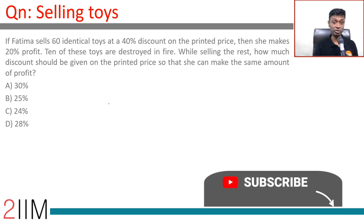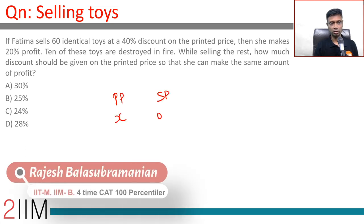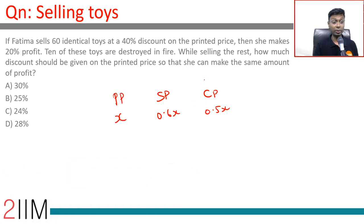40% discount on printed price. So printed price, let's say, is x, so selling price is 0.6x. For 20% profit, cost price is 0.5x.